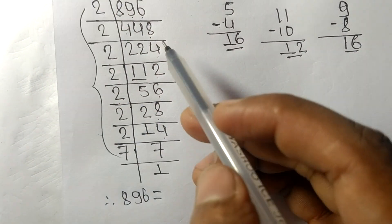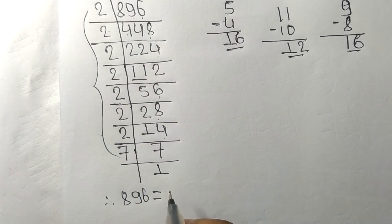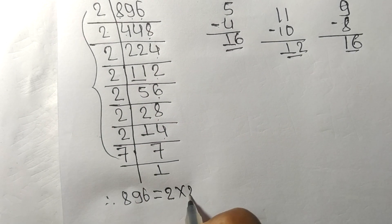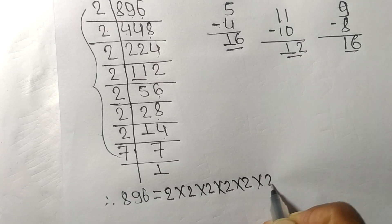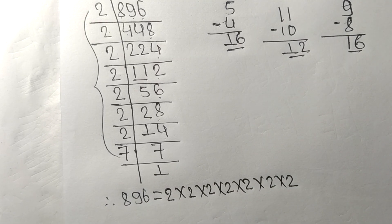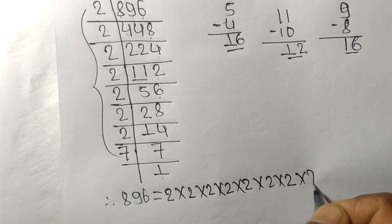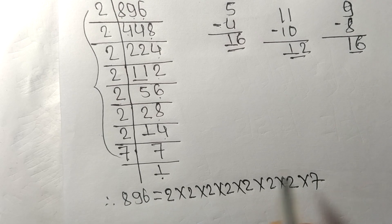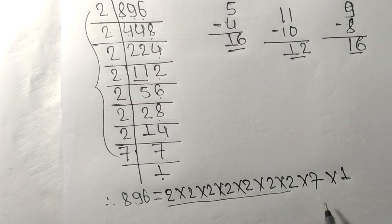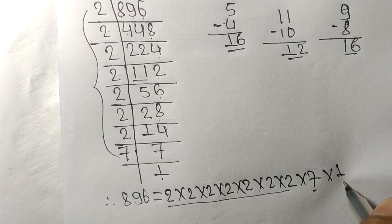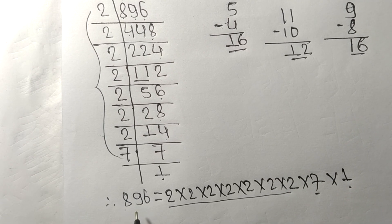Counting from this side: 1, 2, 3, 4, 5, 6, 7 times 2 — so 2 to the power of 7, multiplied by 7. From here we get 1. So 2, 7, and 1 — these mean that 2 to the 7th power and 7 are the prime factors of 896.